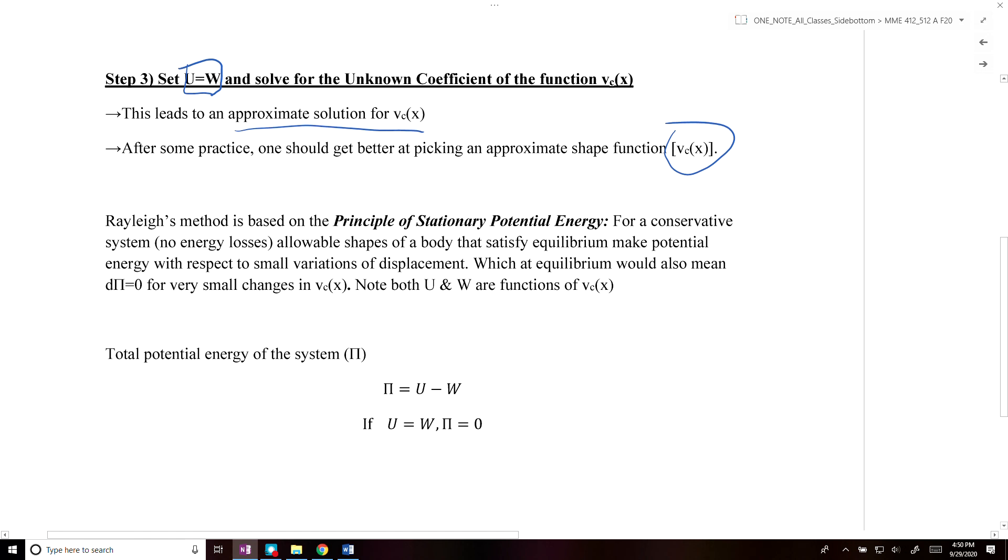The major thing here is that Rayleigh's method is based on the principle of stationary potential energy. For a conservative system with no energy losses, the total potential energy of the system pi is equal to U minus W. In cases where we're at equilibrium, delta pi would also be equal to zero.